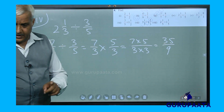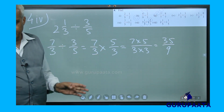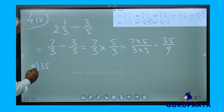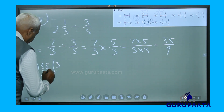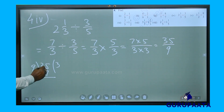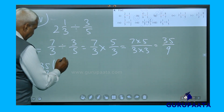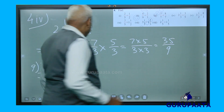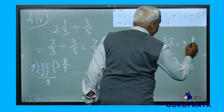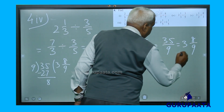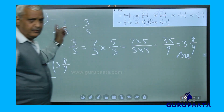35 by 9 is an improper fraction, so it needs to be converted to a mixed number. We divide 35 by 9: 9 times 3 is 27, remainder is 8. So our answer is 3 and 8 by 9. That is the answer for question 4.4.